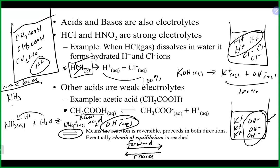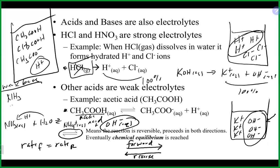Chemical equilibrium doesn't mean equal amounts on each side of the arrow. It refers to rates: the rate of the forward direction will eventually equal the rate of the reverse direction. Just as quickly as products form, they recombine and head back the other way. The net result at equilibrium is that concentrations are locked in place — as long as you don't disturb the equilibrium, the same concentrations of reactants and products will be maintained.